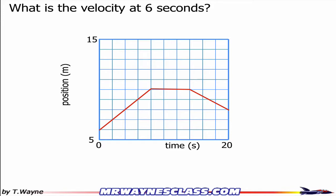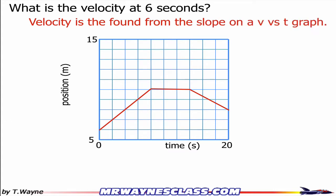On a position versus time graph, the velocity is found from the slope from this v versus t graph. So I'm going to look at 6 seconds on my time interval. Notice the vertical axis goes from 5 to 15 meters, and the horizontal axis goes from 0 to 20 seconds.